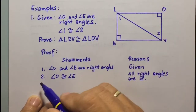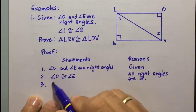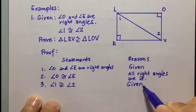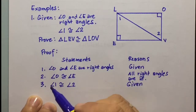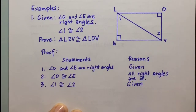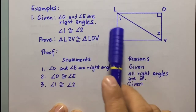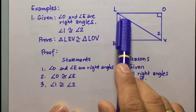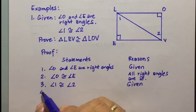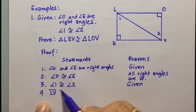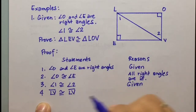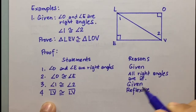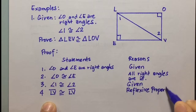For another given, statement three: angle 1 is congruent to angle 2. The reason is given. Looking at the figure, we can use the reflexive property to state that line segment L-V is congruent to line segment L-V. The reason is the reflexive property — a segment is congruent to itself.